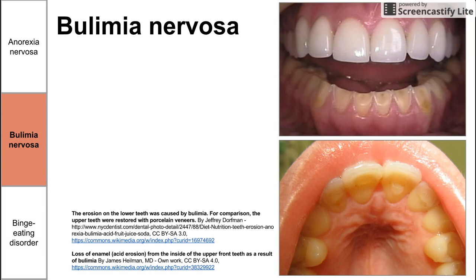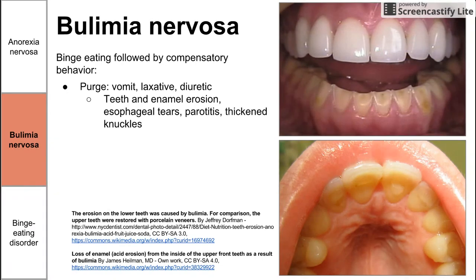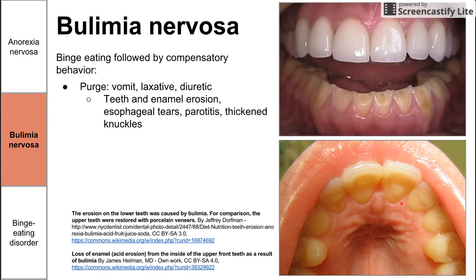Next is bulimia, defined by binge eating followed by compensatory behavior. Compensatory behavior in the purge type includes inducing vomiting, inducing diarrhea with a laxative, or taking a diuretic. Signs that give away vomiting include teeth and enamel erosion, esophageal tears, parotitis (inflammation of the parotid salivary glands), and thickened knuckles from putting fingers in the back of the throat — a callus can build on the knuckles, which is a sign of purging.